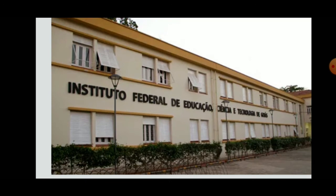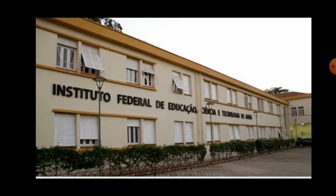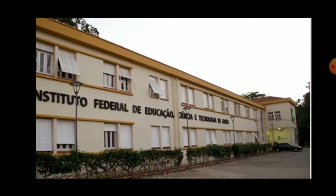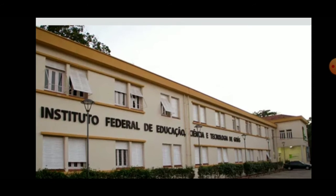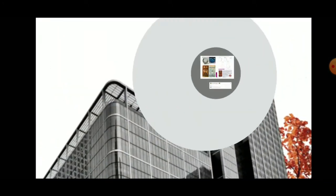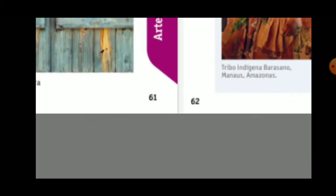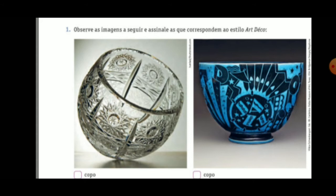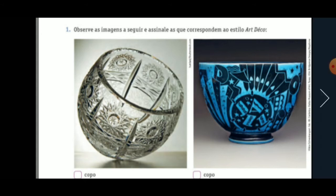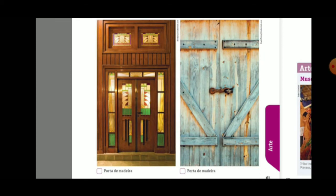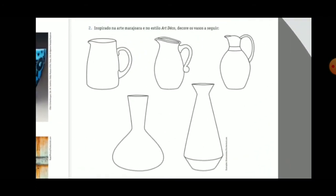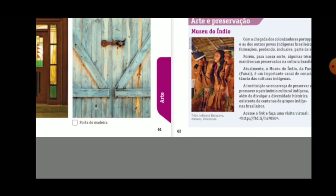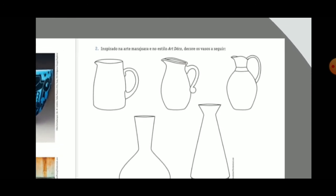It's very interesting to study history in a heritage building. Later I'll post more photos of the building and its gates. There are many monuments listed as heritage within our capital and state. Now let's go to the activity on pages 61 and 62. Exercise 1: observe the following images and mark which corresponds to the Art Deco style — two cups and two doors. Which ones show Art Deco inspiration?